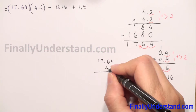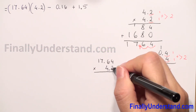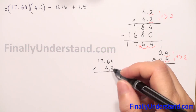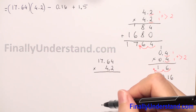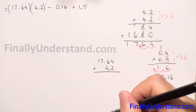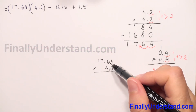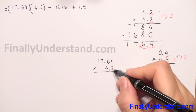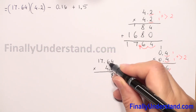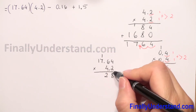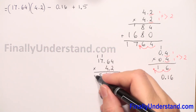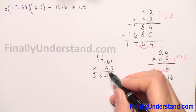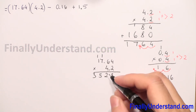We start the multiplication 17.64 × 4.2. I write the number with fewer digits in the second row. We multiply 2 × every digit in the first row: 2 × 4 = 8; 2 × 6 = 12, write 2 carry 1; 2 × 7 = 14 + 1 = 15, write 5 carry 1; 2 × 1 = 2 + 1 = 3. Now we multiply the next digit — but it is in the tenths column, so we forget about decimal points.